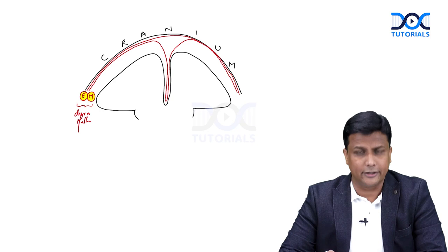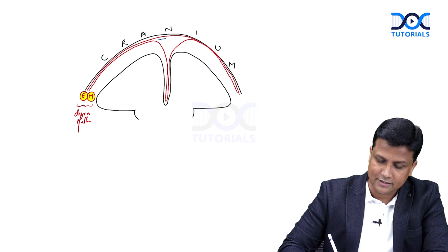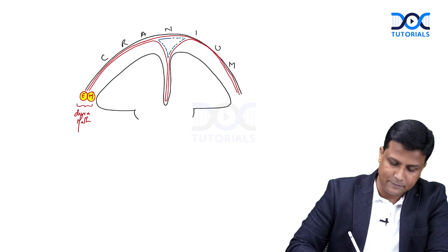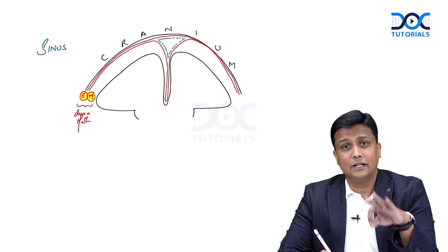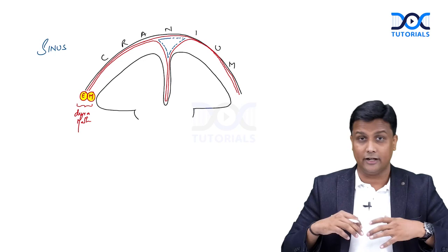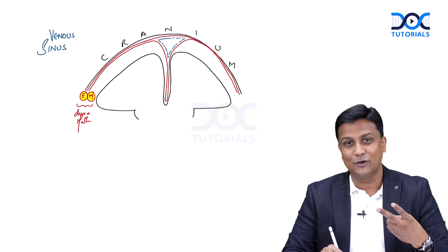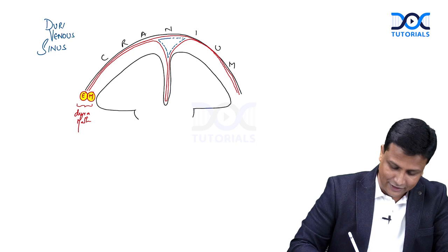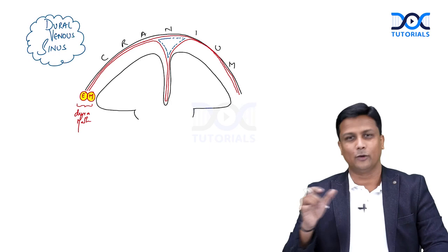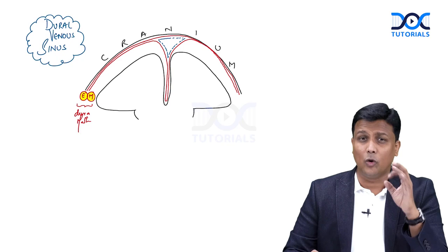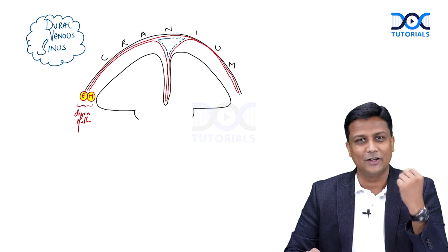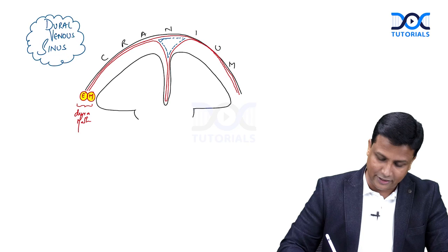Because of this arrangement, you can observe a space is formed between the two layers of dura mater. This space is known as a sinus. The blood collected here is venous blood, so it is called a venous sinus — and because it is formed between the two layers of dura mater, it is called a dural venous sinus. 'Dural' refers to the two layers of dura mater, 'venous' means draining blood, and 'sinus' is the space.